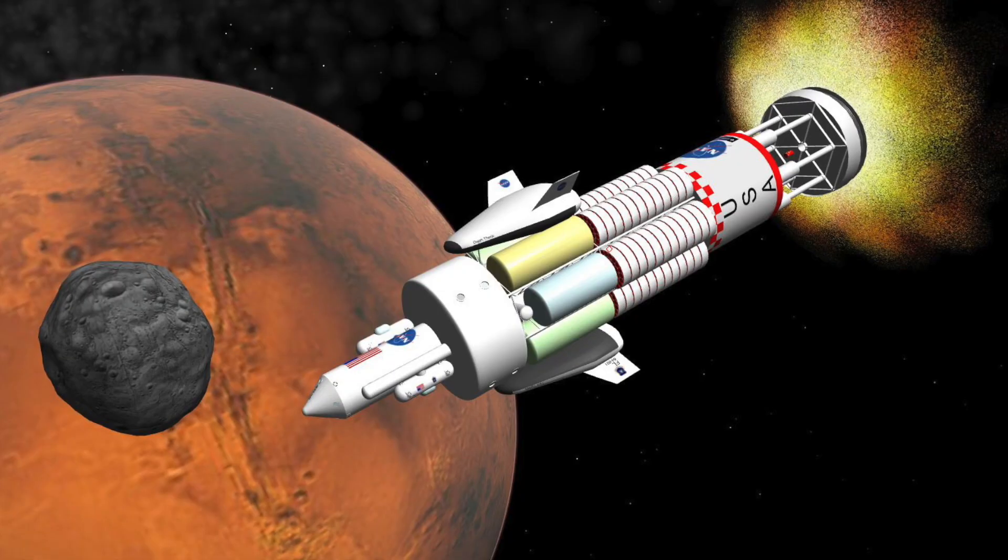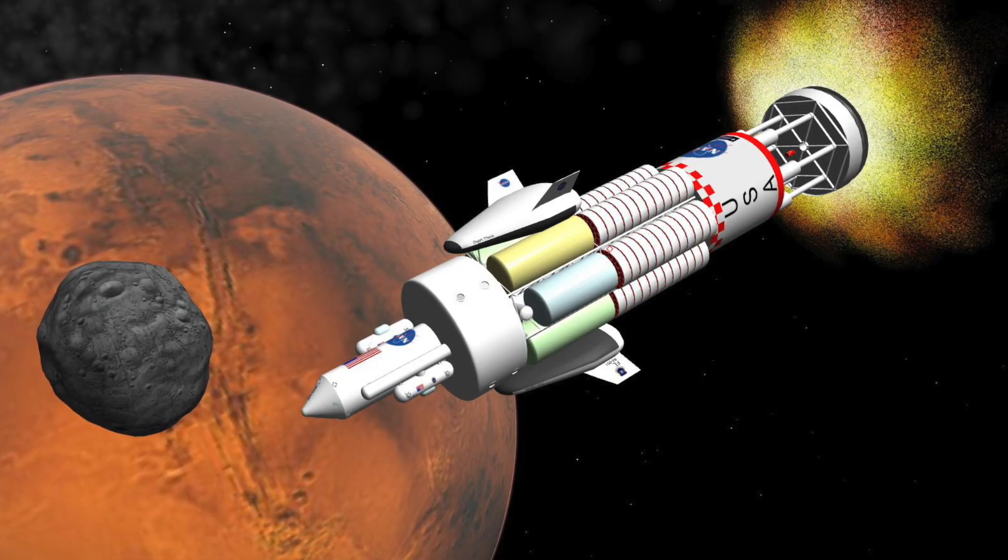The Orion nuclear pulse drive was a revolutionary concept that combined high exhaust velocity, ranging from 19 to 31 kilometers per second, with meganewtons of thrust. This unique feature set it apart from most other spacecraft propulsion systems, which typically excel in one of these aspects but not both. Specific impulse, a key measure in rocketry, indicates how much thrust can be obtained from a given mass of fuel. For Orion, achieving both high thrust and high specific impulse required extreme power levels.